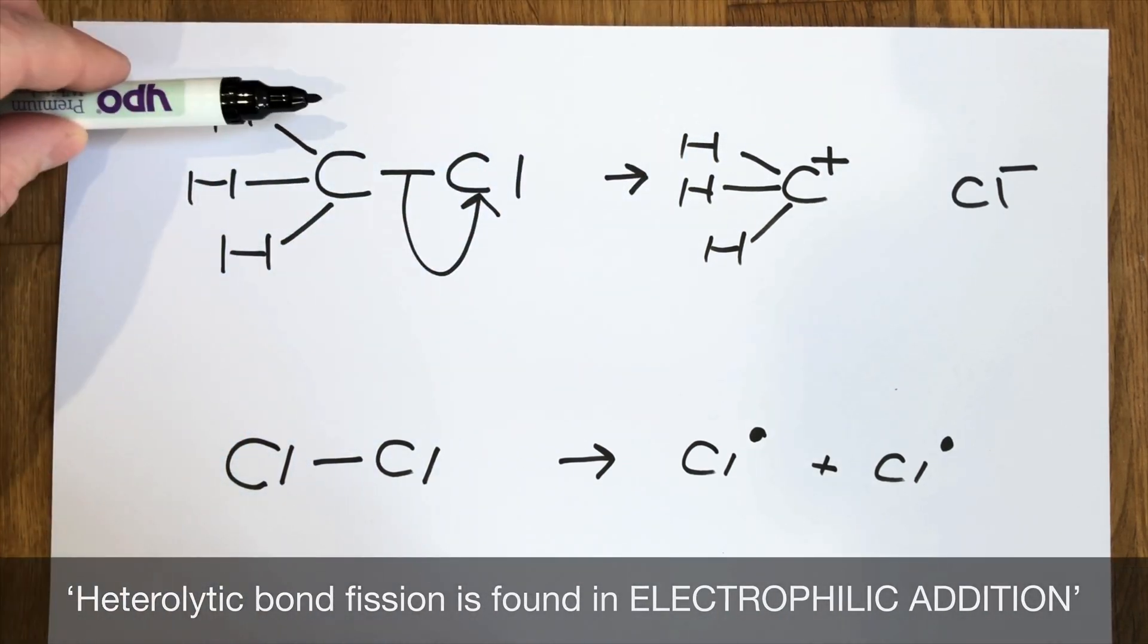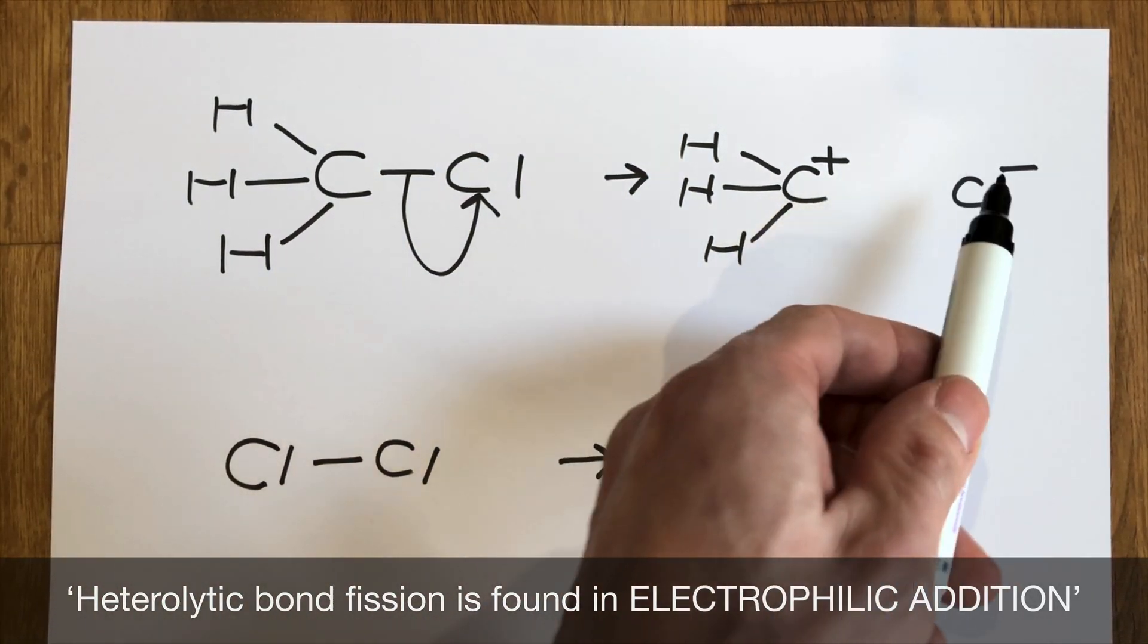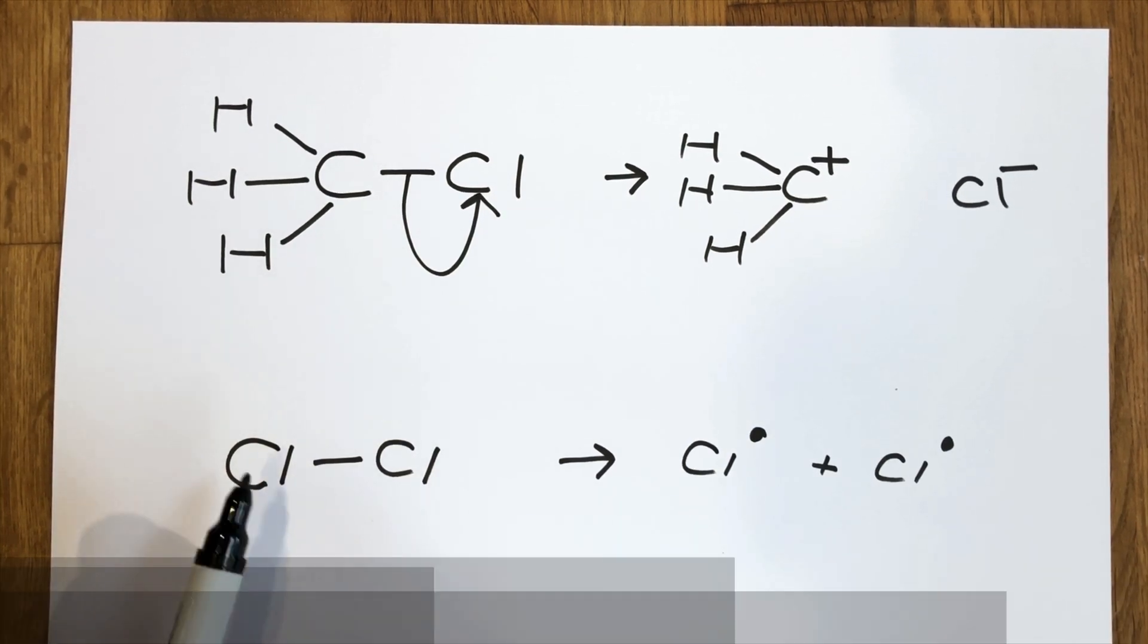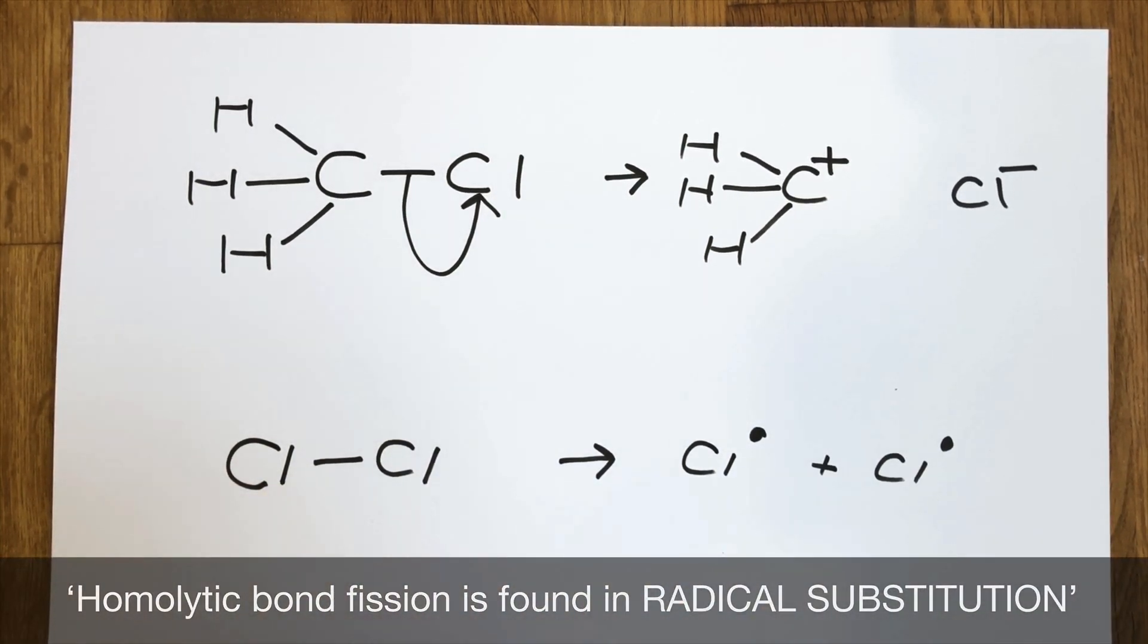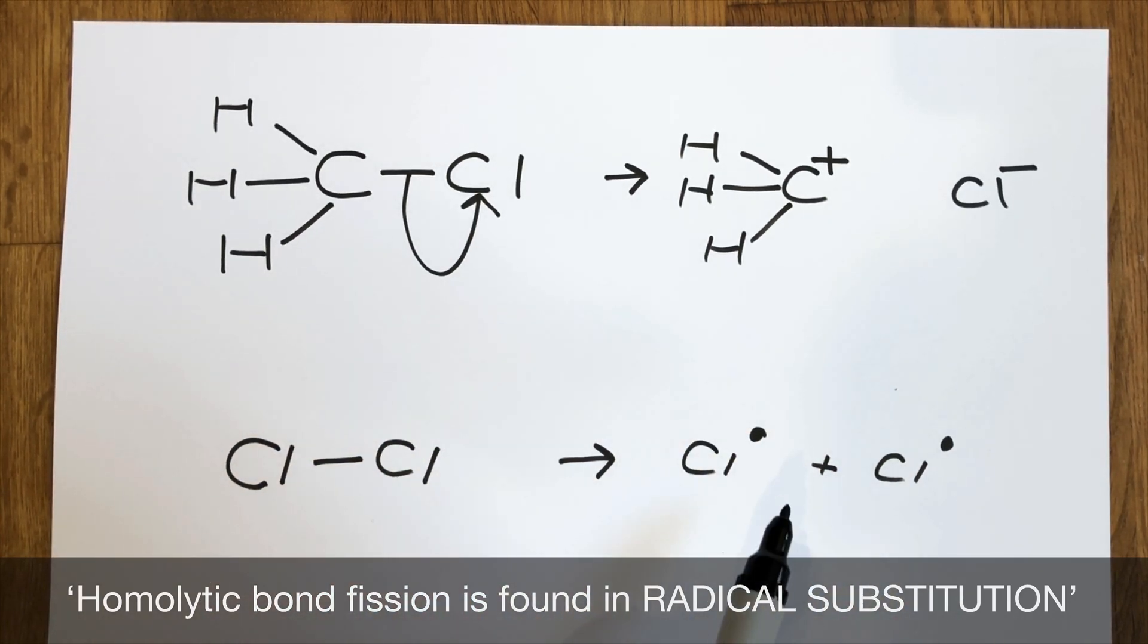Heterolytic bond fission takes place when a curly arrow is used to show the formation of two different ions. Homolytic bond fission takes place when there is no use of a curly arrow and I make free radicals as the product.